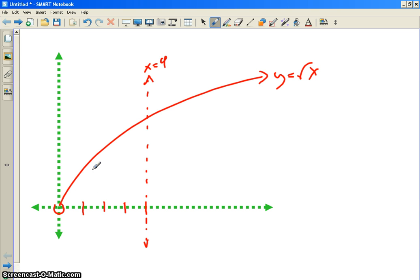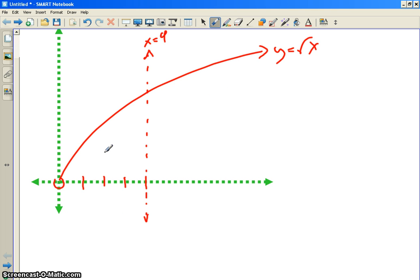So, see this region here, this area? All right, that's not the question. The question isn't what's the area. The question is what's the volume you get if you revolve this region about the x-axis?